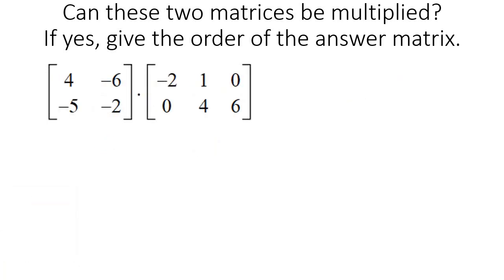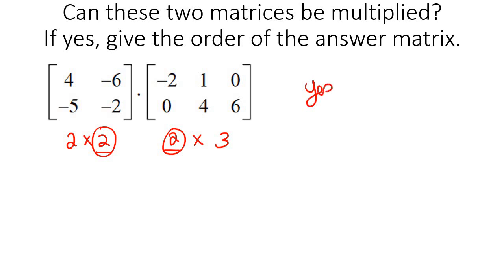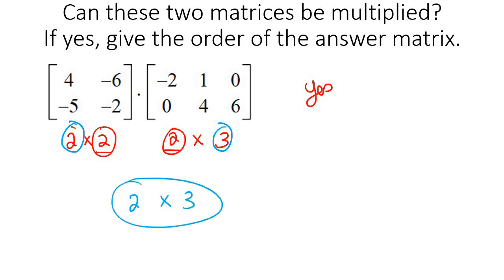They can only be multiplied if those two inner numbers are the same. Here we have a 2 by 2 matrix — 2 rows, 2 columns — and here a 2 by 3 — 2 rows, 3 columns. Look at the middle numbers: are they the same? Yes. So these two matrices can be multiplied, and the answer will be a 2 by 3 matrix.